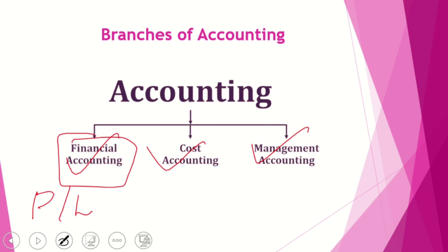Cost accounting is about ascertaining and controlling the cost of production of manufactured goods, ascertaining expenses, and then fixing the prices of particular products. With the help of cost accounting, we can control and reduce costs, manage expenses, and fix the prices of products.